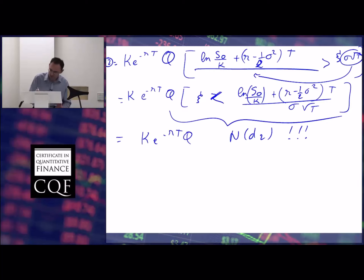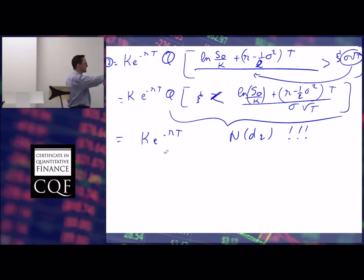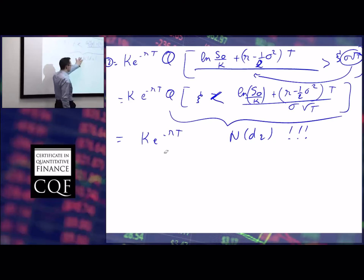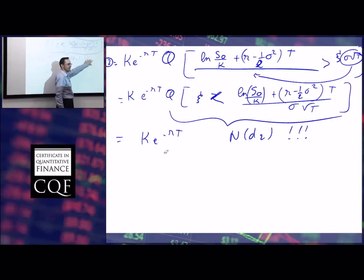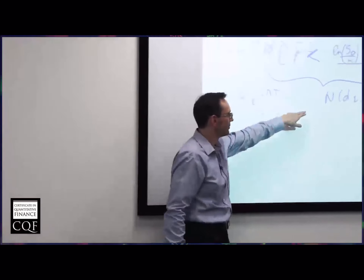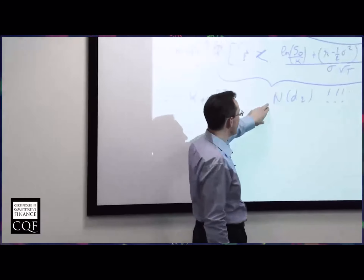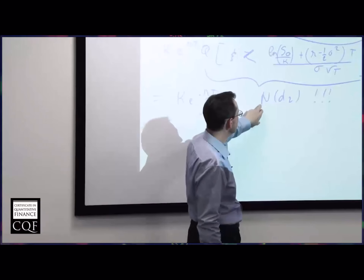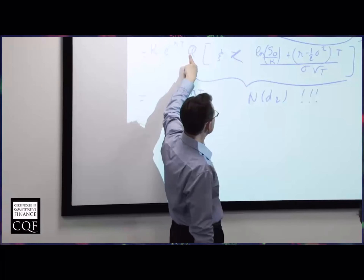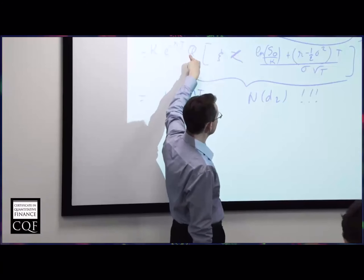So the second term in our fundamental asset pricing formula coincides with the second term in the Black-Scholes formula. But now we know what N of d2 is: N of d2 is the probability of exercise under Q.